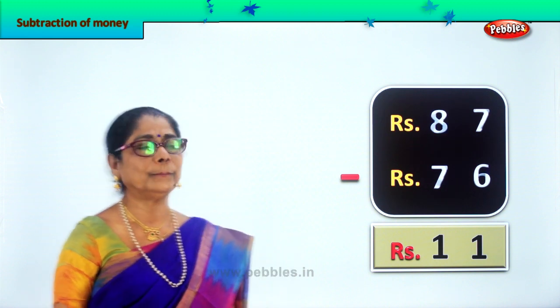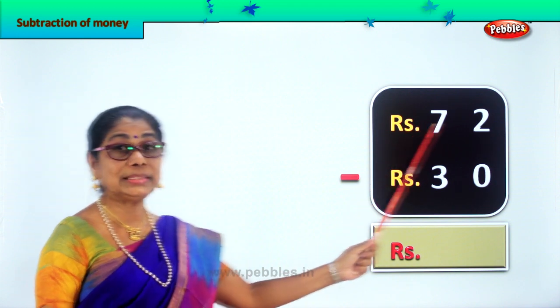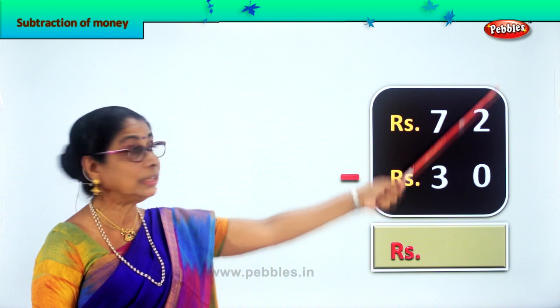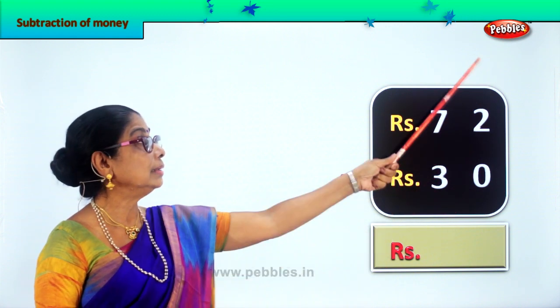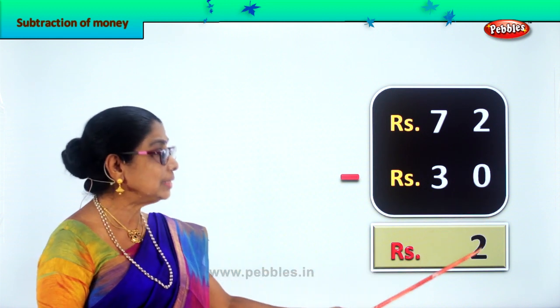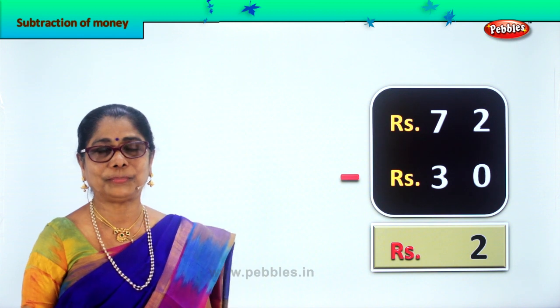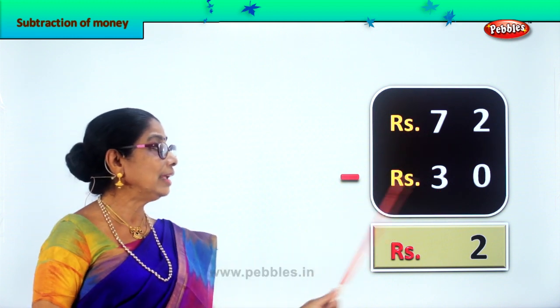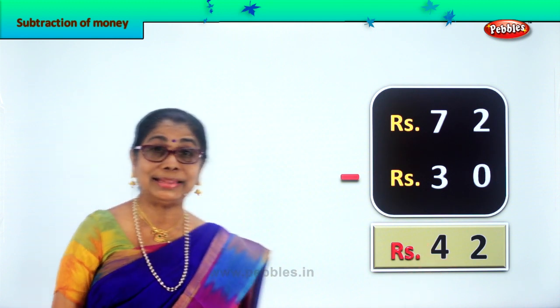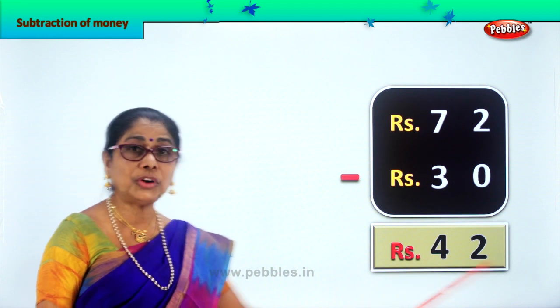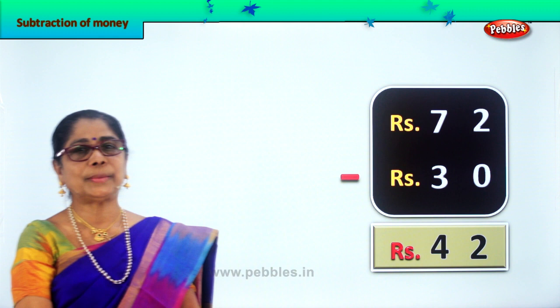Let's look at another sum. You are given rupees 72 minus rupees 30. In the ones place you have 2 minus 0 — 2 take away 0 gives you 2 itself. In the tens place you have 7 take away 3, which gives you 4. So rupees 72 minus rupees 30 is equal to rupees 42. Did you enjoy subtraction of money?